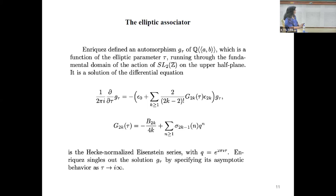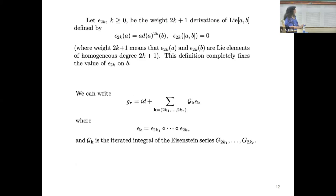The first ingredient is this automorphism G_tau. It should be an automorphism of Q{{A,B}} tensor functions on the upper half plane, because the coefficients of G_tau are functions of tau. You can get lots of G_tau's this way; you want to pick one good solution. Mazzama normalizes one solution by specifying asymptotic behavior. You can expand G_tau as a series in the universal enveloping algebra of the Lie algebra of these derivations, the epsilons.